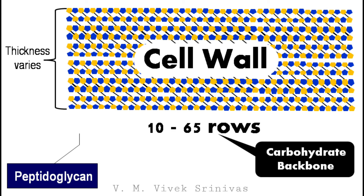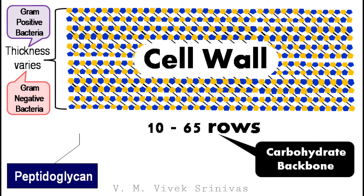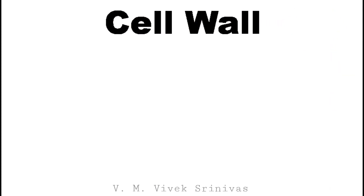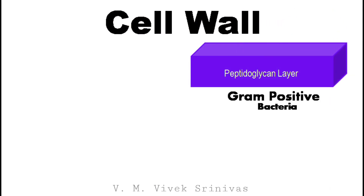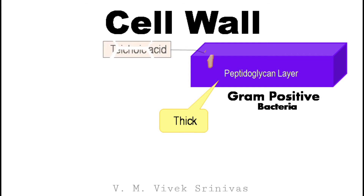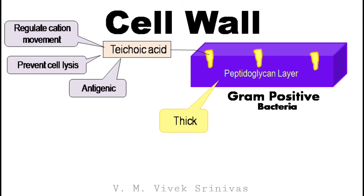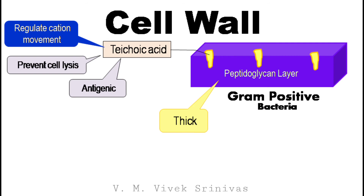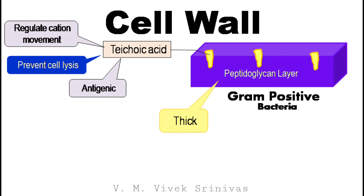The thickness and the chemical composition of the cell wall varies between gram-positive bacteria and gram-negative bacteria. The cell wall of the gram-positive bacteria is made up of many layers of peptidoglycan that form a thick and rigid structure. In addition to the peptidoglycan, the cell wall of the gram-positive bacteria also contains teichoic acid. This teichoic acid is responsible for regulating the movement of cations in and out of the cells. Next, it prevents cell lysis when cells are at low pH.